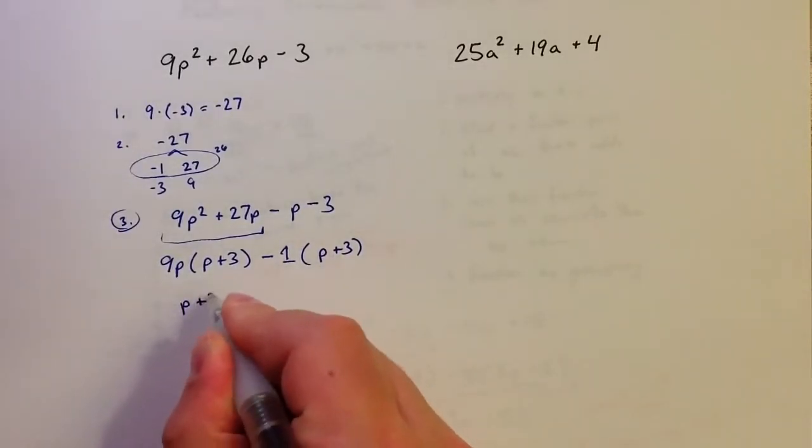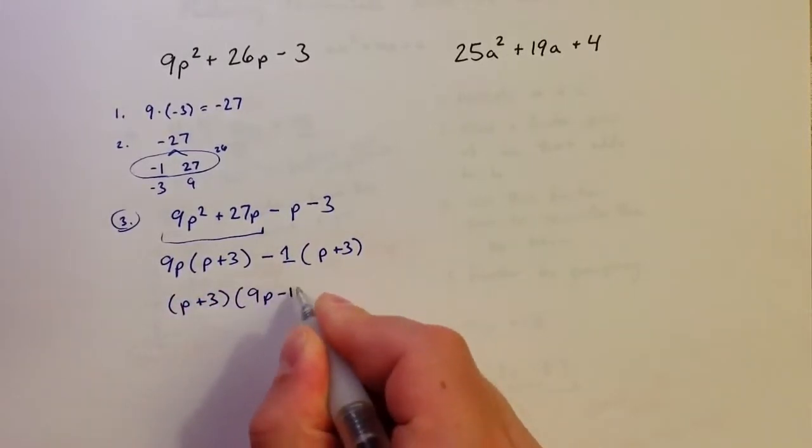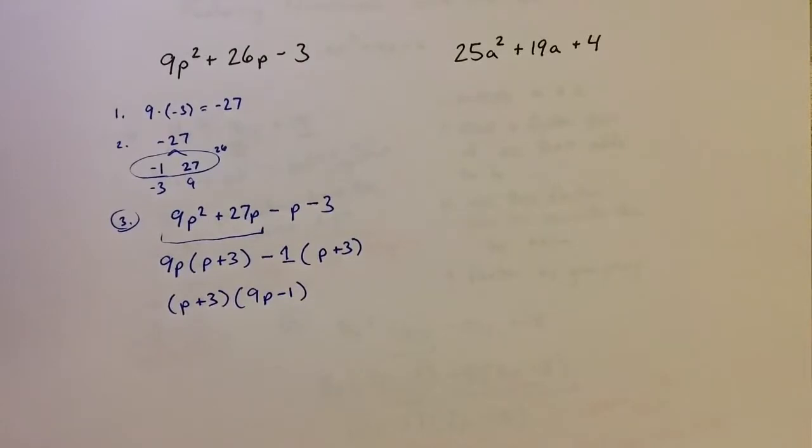So p plus 3 is one of the factors and 9p minus 1 is the other. And again, we can check that by foiling.